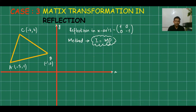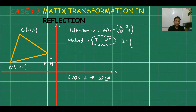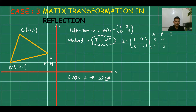The method: the image PQR equals the matrix of the transformation [1, 0; 0, −1] multiplied by the object ABC. We write the object as columns: A = (−5, 1), B = (−1, 2), and C = (−4, 4). This is how you write the object as a matrix.